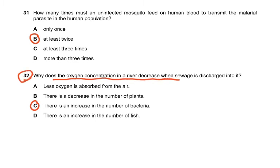Question 32: why does the oxygen concentration in a river decrease when sewage is discharged into it? Sewage is a lot of decomposing matter, so the bacterial number increases massively — from say 1 million up to 100 million. Those bacteria respire aerobically and use up the oxygen in the water, which is when the fish start to die. The more the biochemical oxygen demand (BOD), the more polluted the water is.